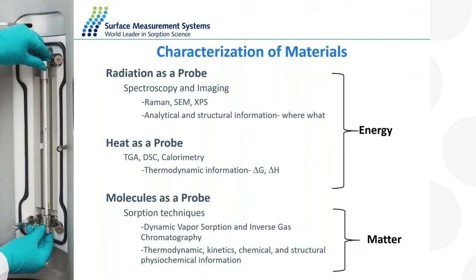The second most popular class of techniques uses heat as a probe. This typically involves heating a sample and looking at thermal events — TGA, thermogravimetric analysis, differential scanning calorimetry, and other calorimetric techniques. These provide thermodynamic information: delta H, delta G, and sometimes kinetics. Both radiation and thermal methods are really energy-based approaches — you're changing the energy of the system to get some information.